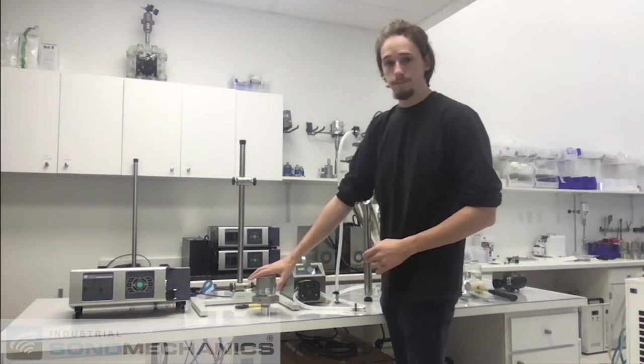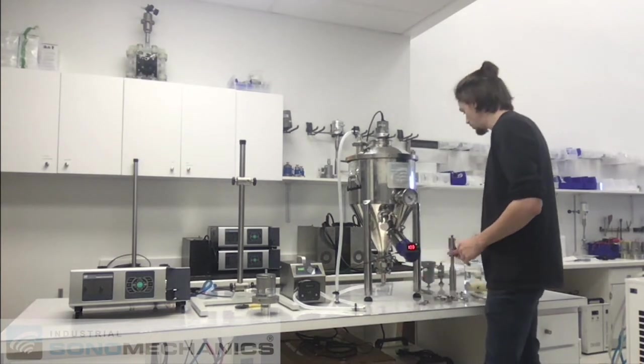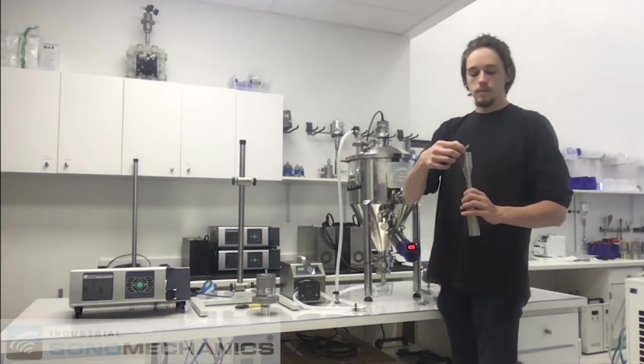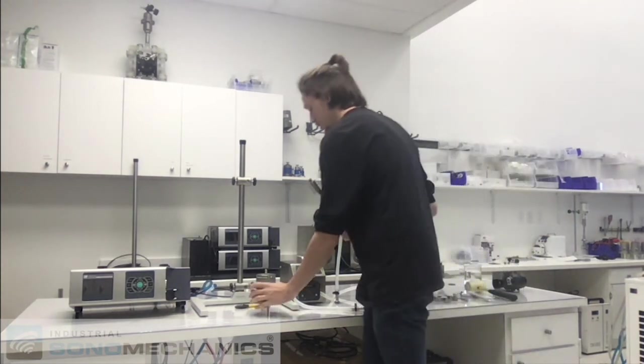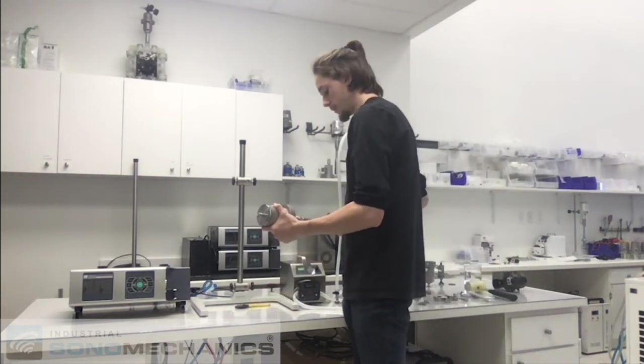Now you've got your transducer and we're going to grab our FBH horn. Make sure you have a mylar washer in between the horn and the transducer. Screw the horn into the transducer by hand.